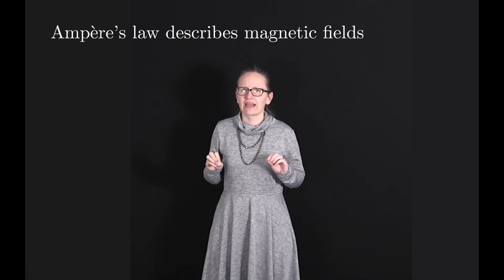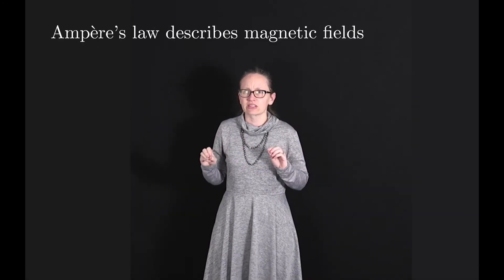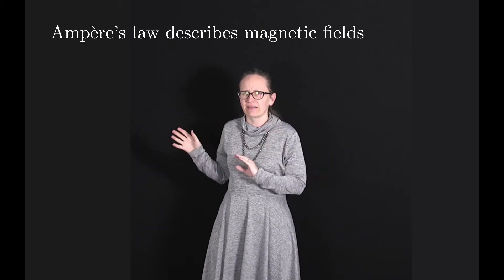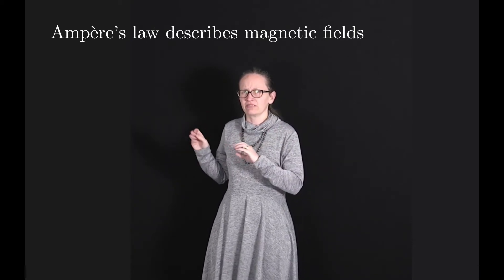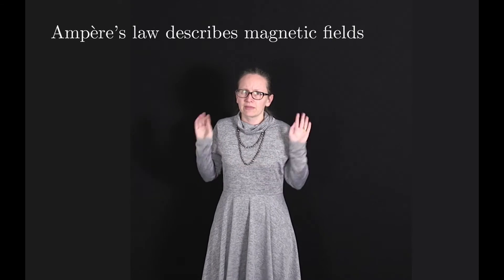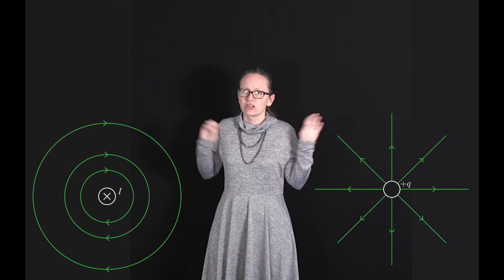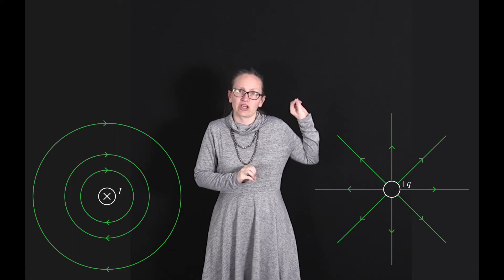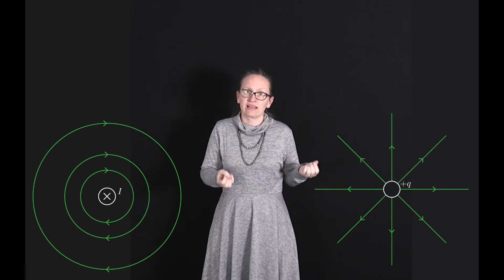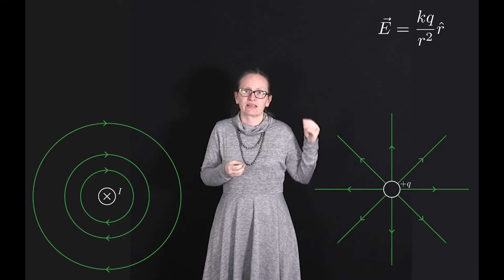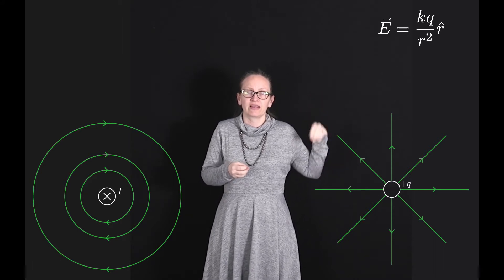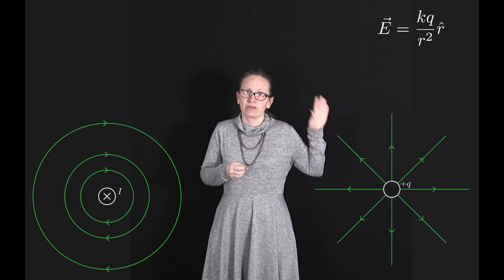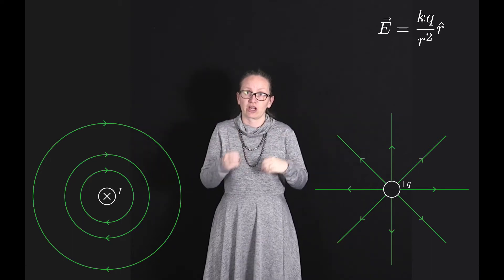We're going to look at Ampere's law, which is a bit like Gauss's law except that it's for magnetic fields and it's a line rather than a surface integral. Let's start by considering both the electric field case and the magnetic field case. For the electric field case, take a charge of +Q. We know the electric field is given by E = kQ/R² times the radial unit vector, so it's directed away from that charge.